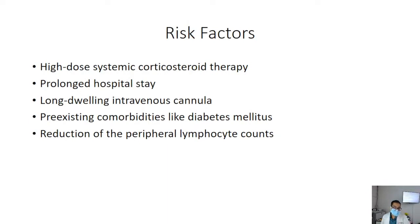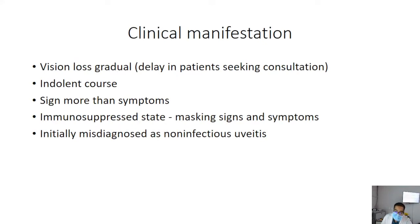The most important things to keep in mind in post-COVID patients: prolonged hospital stay, high-dose systemic corticosteroid therapy, long-dwelling intravenous cannula or catheter use, and preexisting comorbidities like diabetes mellitus — all predispose to infection. Additionally, COVID patients have been found to have a reduction in peripheral lymphocyte count, predisposing to fungal infection. If a patient presents post-COVID with visual loss, even mild gradual loss, consider this diagnosis. Signs are more than symptoms, and in immunosuppressed patients, signs may be masked, leading to misdiagnosis as non-infectious uveitis.